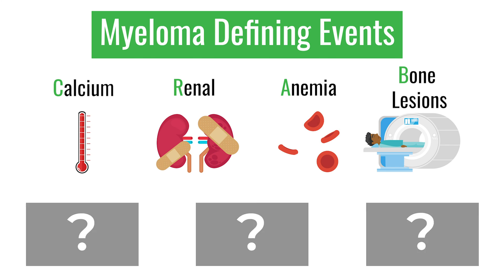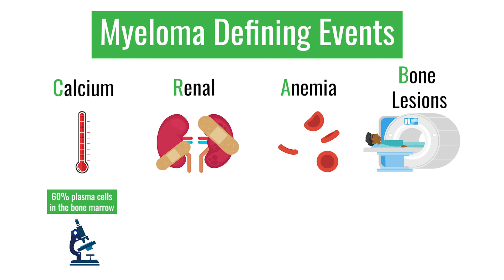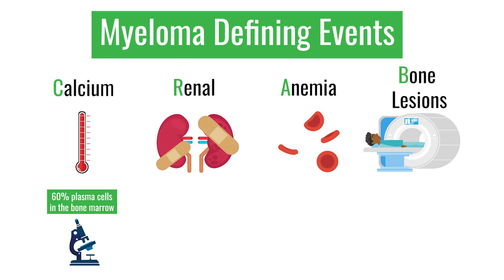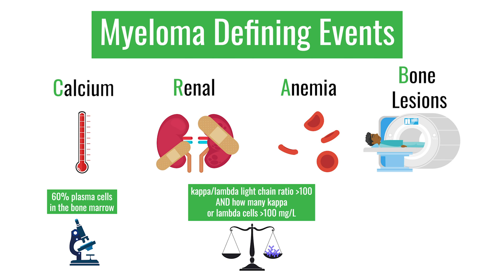The three additional myeloma defining events are: number one, 60% clonal plasma cells in the bone marrow. On bone marrow biopsy, if 60% or more of cells are plasma cells — shown by immunohistochemistry or flow cytometry to express only one type of light chain, confirming they are clonal malignant cells — that is one of the newer myeloma defining events.